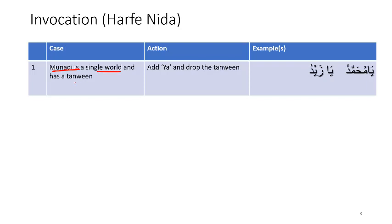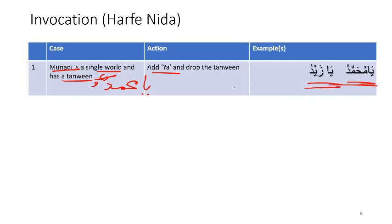Say the Munadi is a single word and has a Tanween. The Munadi is the person that we are calling. Single word means it is not an Izaafah or a compound. So for example, if we have Muhammadun or Zaidun — again, that's a single word with a Tanween. If we want to call Muhammad, we add Ya and drop the Tanween, so instead of the Tanween we will just have a Dhamma. We end up with Ya Muhammadu, or if we want to call Zaidun, we say Ya Zaidu. This is the first situation.